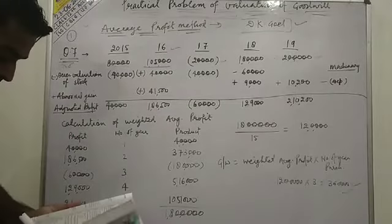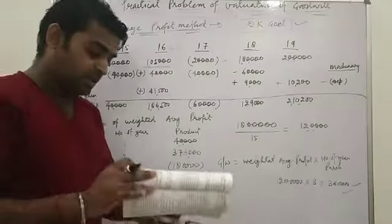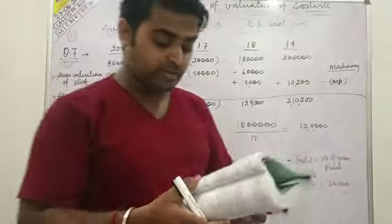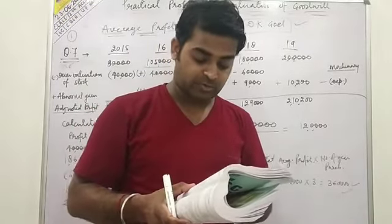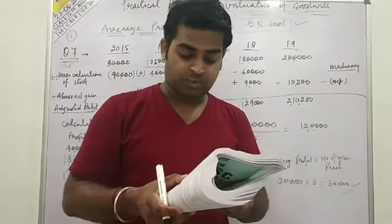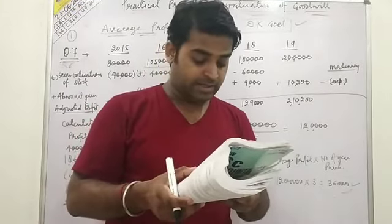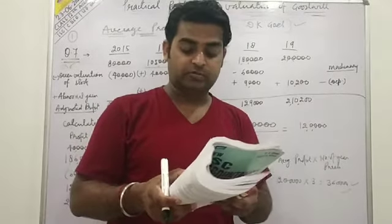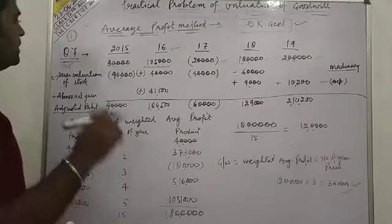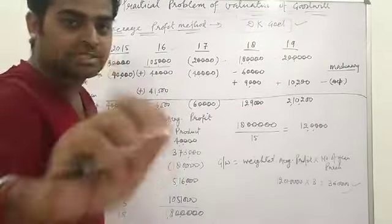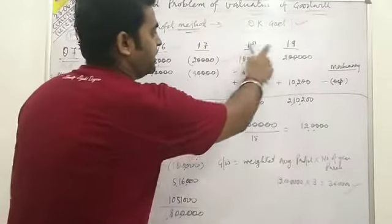I will read the question once again. Calculate the value of goodwill on the basis of 3 years' purchase of weighted average profit of the last 5 years. Profit is to be weighted 1, 2, 3, 4, 5, and the greatest weight is to be given to the last year. The profits of the last 5 years are given for 2015, 2016, 2017, 2018, and 2019.